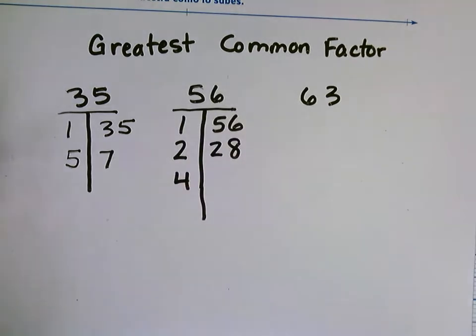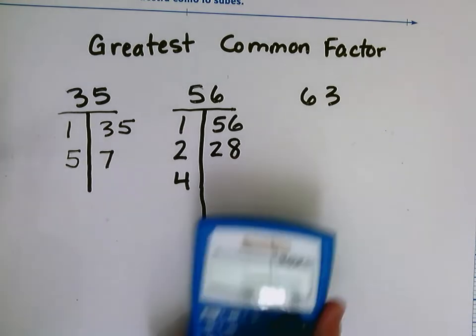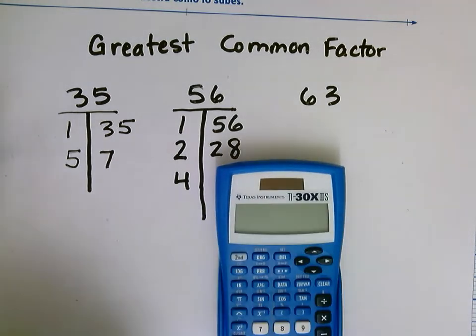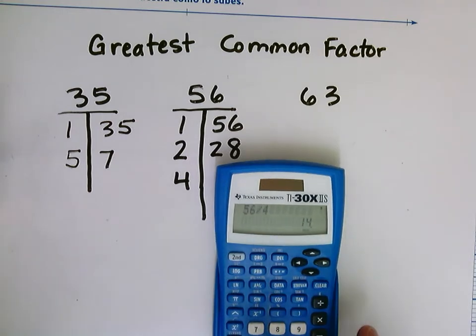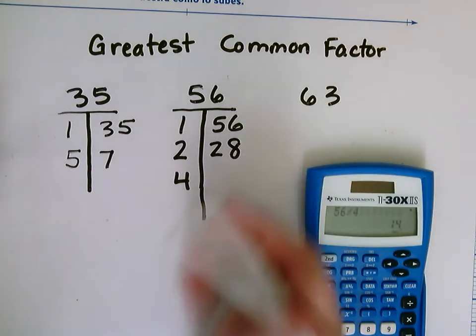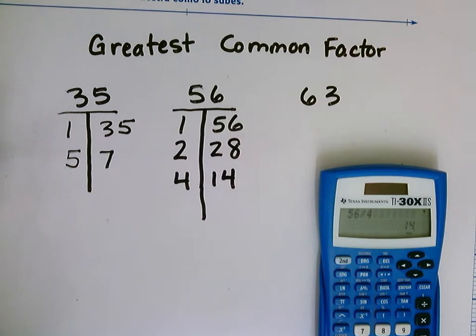4, I can check to see if 4 is divisible by 56. There's no secret trick for 4, so one of the best ones if I don't want to do division is to use my calculator. And I can type in 56 divided by 4 equals 14.